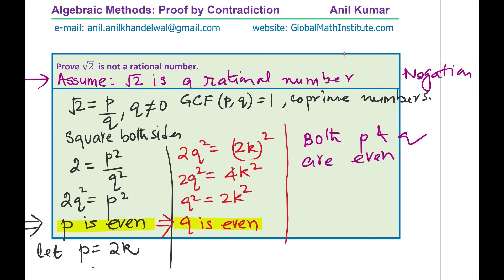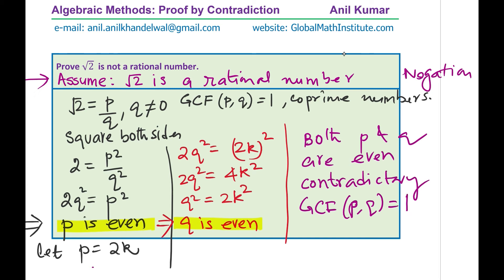So we are saying both p and q are even — if we assume that square root of 2 is a rational number. But that is a contradiction, because the greatest common factor between p and q was assumed to be 1. Since both are even, the GCF is at least 2. Do you see the contradiction? We have shown that the assumption that square root of 2 is a rational number is not true. Since the assumption is not true, the original statement is true.